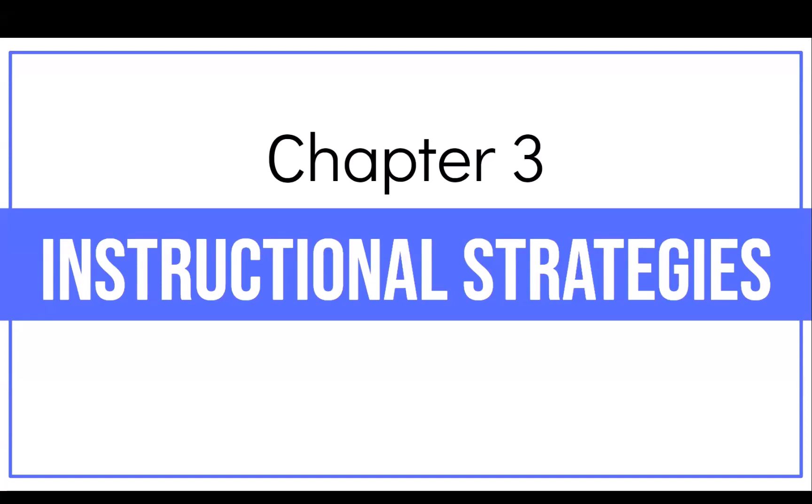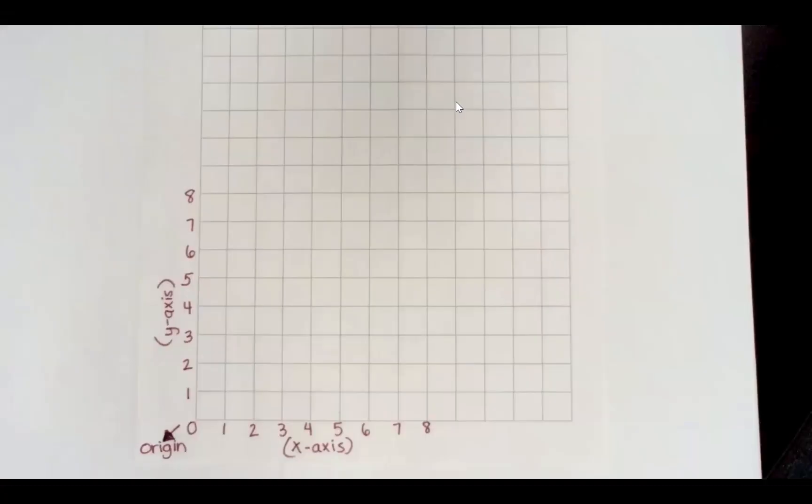Now let's dig into some instructional strategies that you will see in this unit. While we won't be looking at every strategy from Unit 7 in this video, I will be modeling strategies for each of the IOAs discussed earlier. First, we are going to look at IOAs 6A and 6B, focusing on the coordinate plane, graphing in the coordinate plane, and analyzing numerical patterns when given a rule.